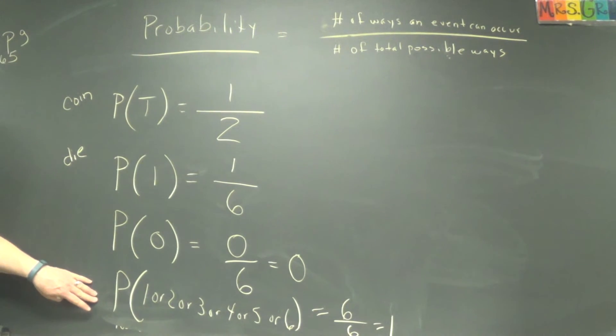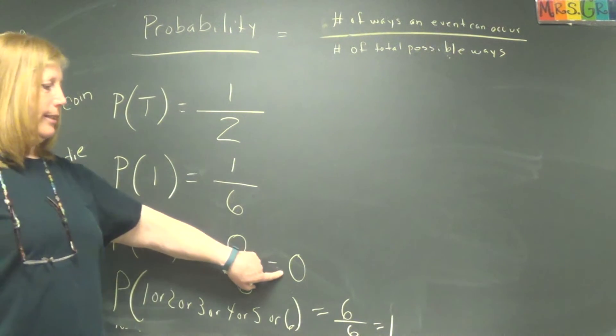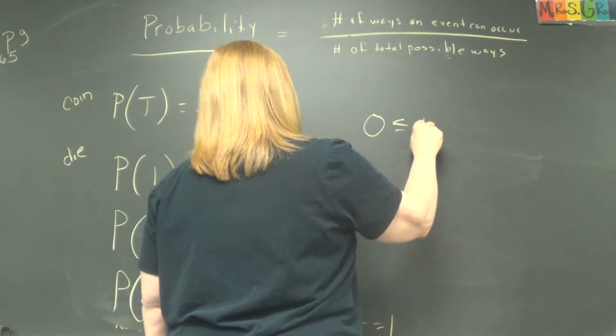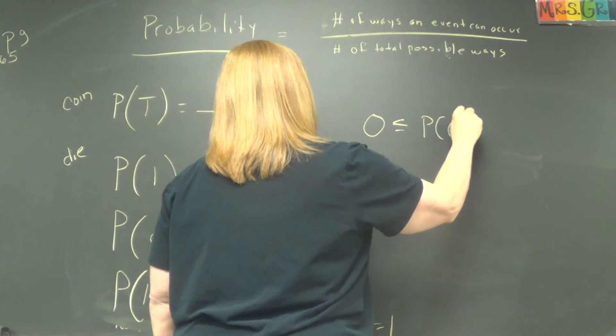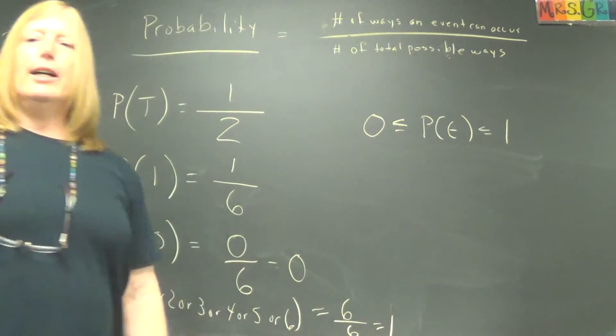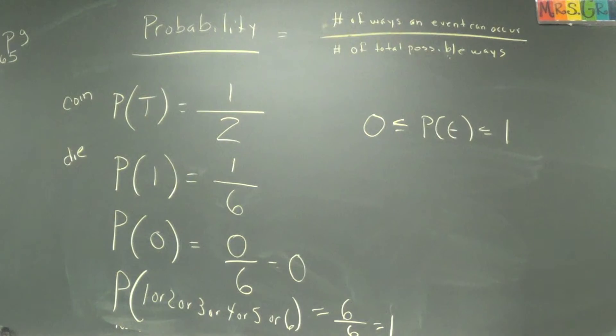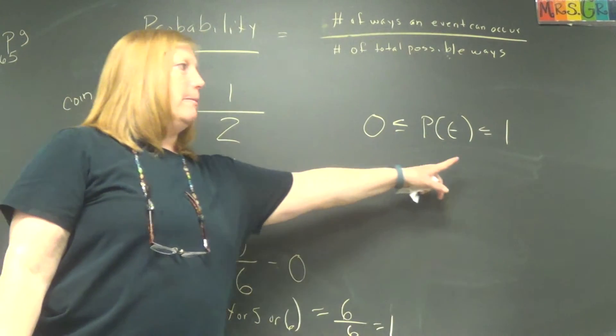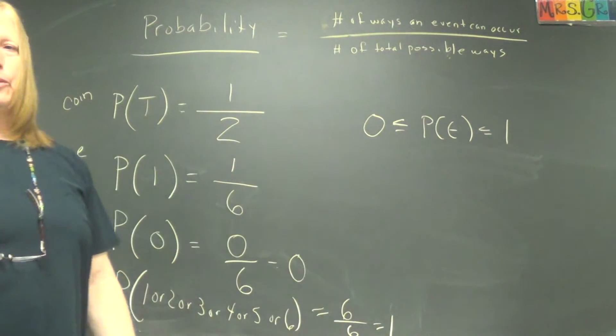So this example is impossible. This example always happens. So it shows you the lowest and the highest possible probabilities. Make a note of that. The probability of any event has to be between zero and one. One is totally, it must occur, and zero is it cannot possibly occur. And all the other probabilities are the fractions or decimals in between.